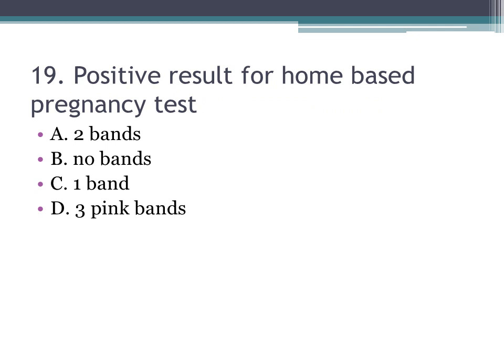Number nineteen: positive result for home-based pregnancy test — A. two bands, B. no bands, C. one band, D. three pink bands. The correct answer is A, two bands.